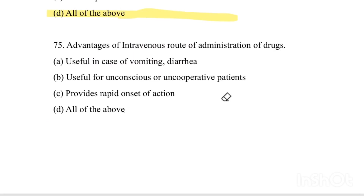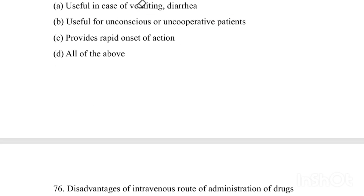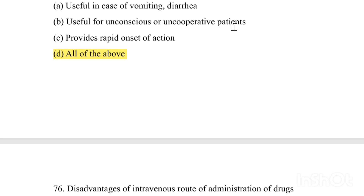Advantages of intravenous route of administration: Option A: Useful in case of vomiting and diarrhea. Option B: Useful for unconscious or uncooperative patients. Option C: Provides rapid onset of action. Option D: All of the above. Answer is Option D, All of the above — useful in vomiting/diarrhea, for unconscious/uncooperative patients, and provides rapid onset of action.